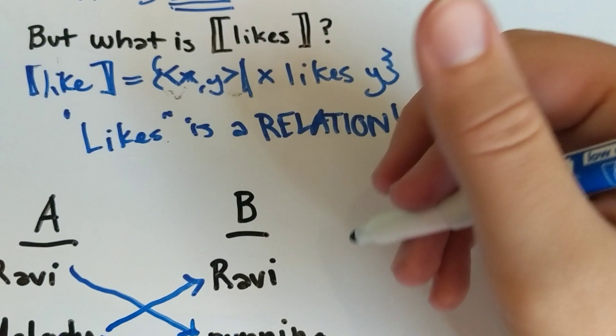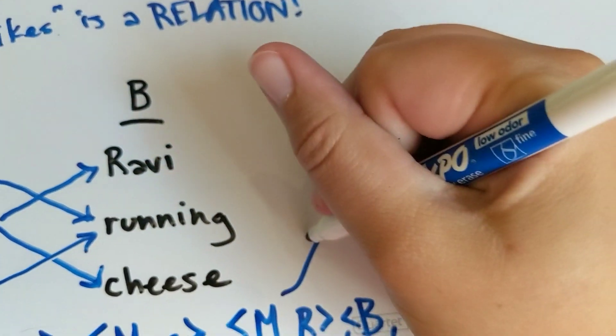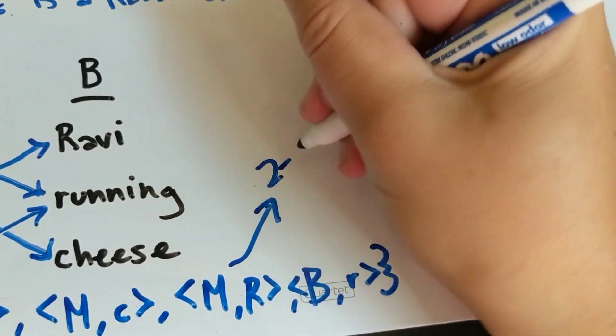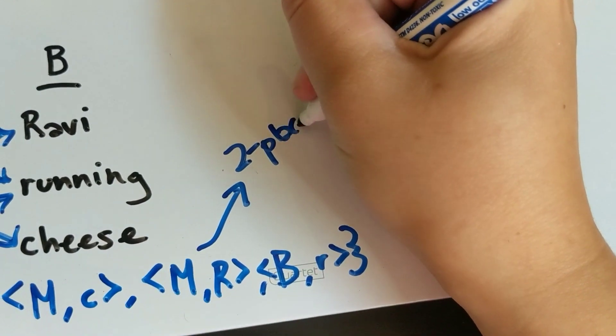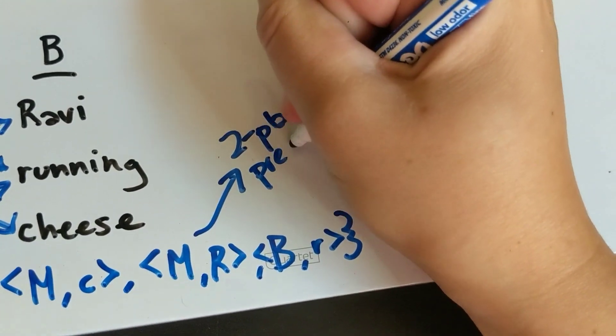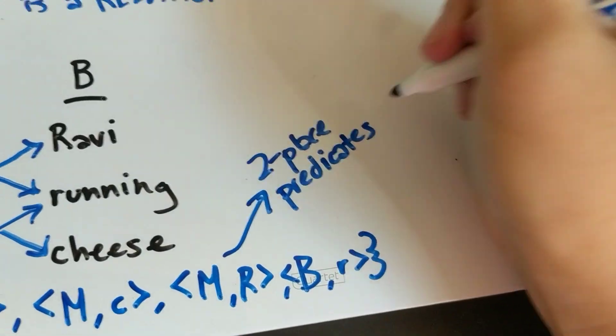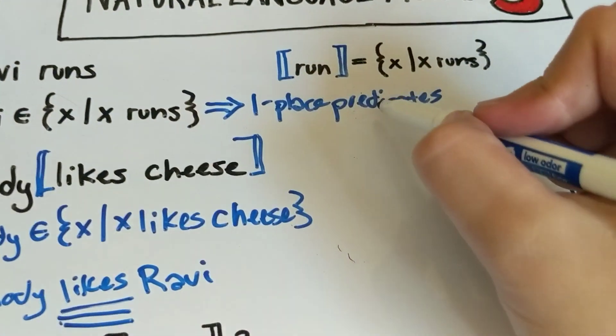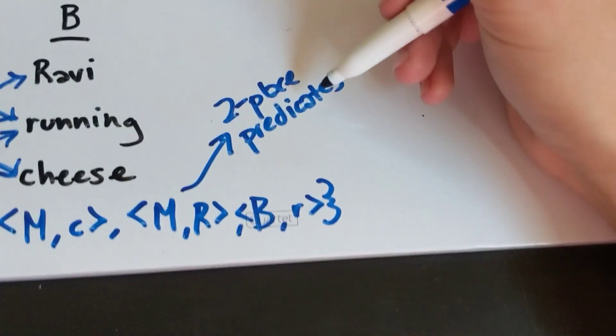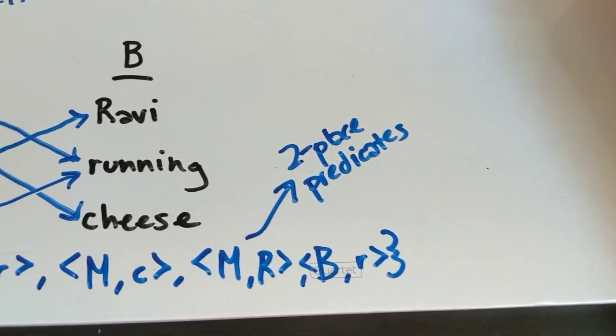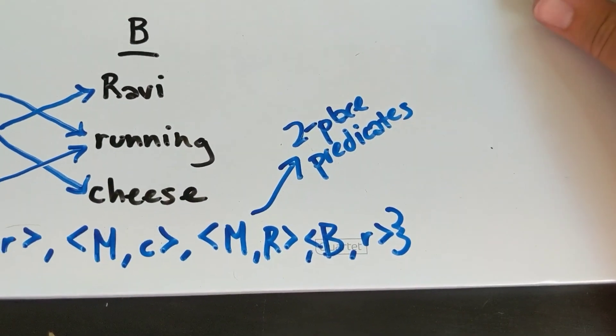And we've got things that we call two-place predicates. You might know these better as intransitive verbs and transitive verbs. As it turns out, there are in fact also three-place predicates.